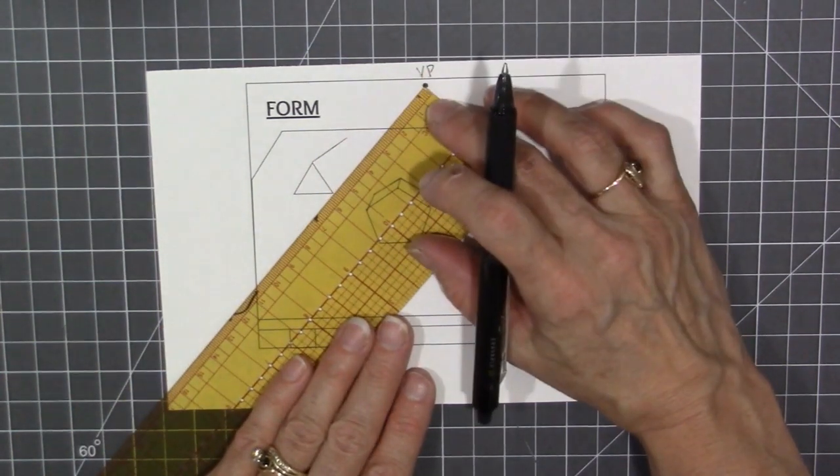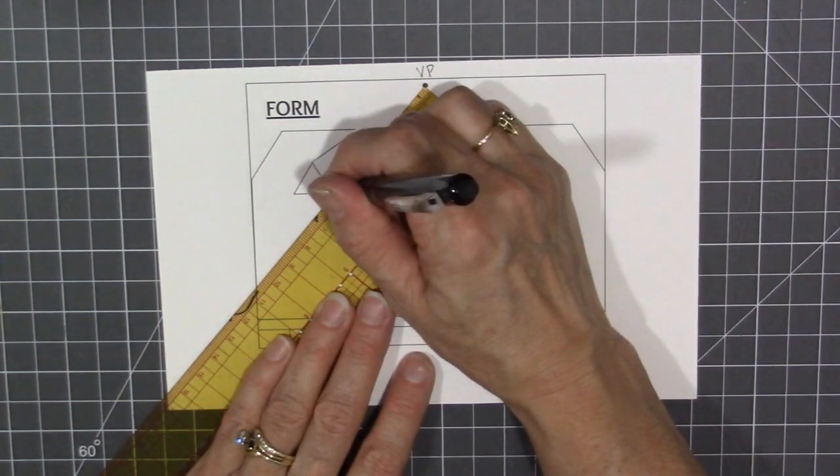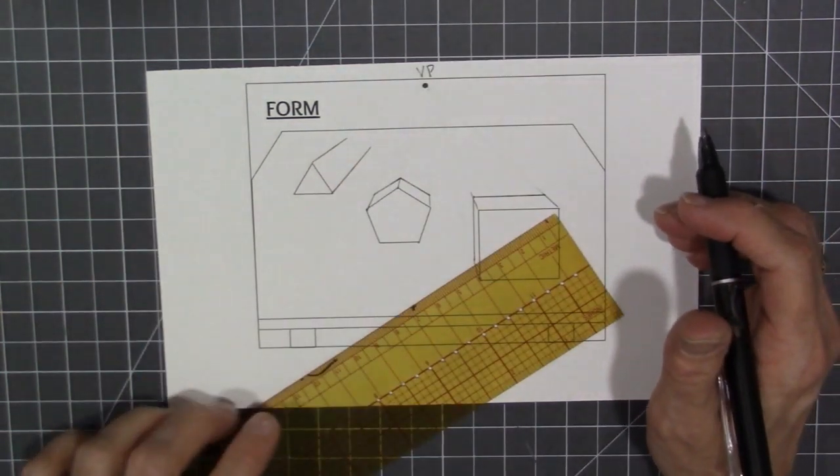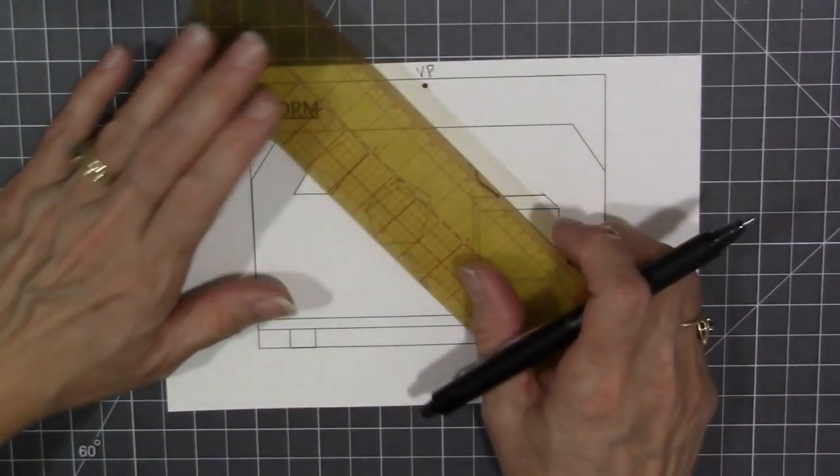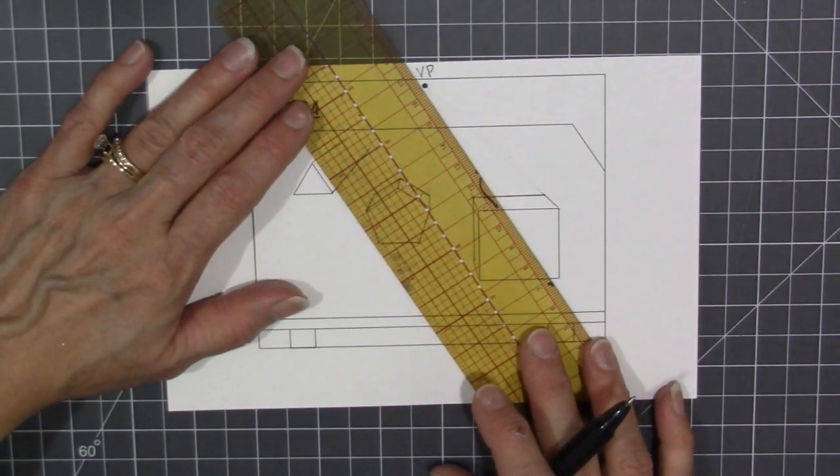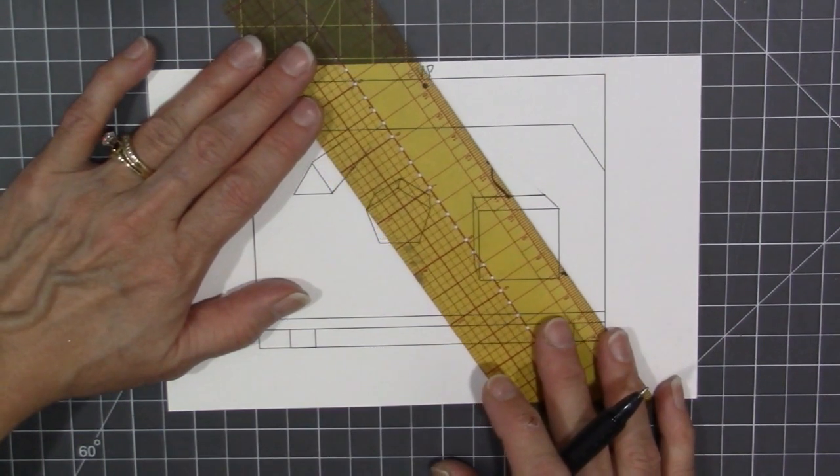Notice I'm connecting my ruler to the vanishing point, but I'm only drawing my vanishing lines long enough to make the thickness of the shape where I want it to be.